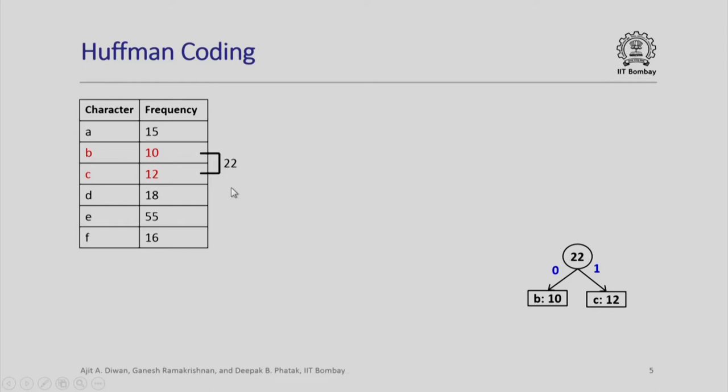We can proceed exactly in this fashion. Now we have our table which has frequencies of 15 for A, 22 for B and C, 18 for D, 55 for E and 16 for F. We continue the same logic to build the tree. Now we find that the two minimal elements are A and F which occur for 15 and 16 times. Since these are unrelated to this B and C, we create a separate subtree here in which 31 is inserted as the value of data. The left child represents A which occurs 15 times. The right child is representing F which occurs 16 times.